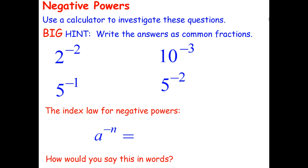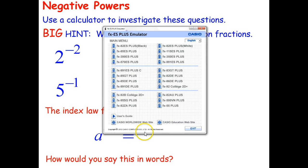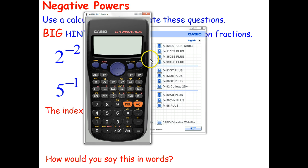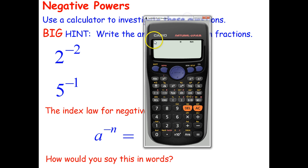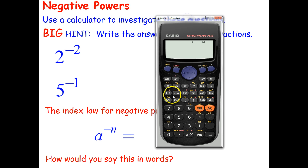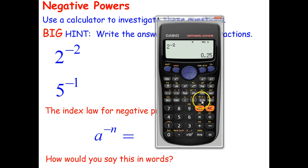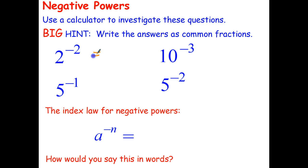Let's use our calculator to help us work out how we interpret negative powers. So 2 to the power of negative 2 — let's just type that in. 2 raised to the power of negative 2 gives us 0.25 as a decimal, but as a fraction that's the same as 1 over 4.